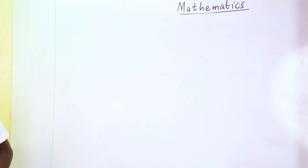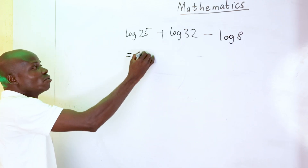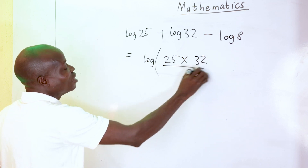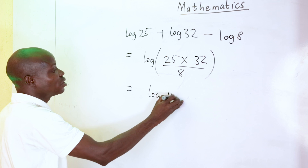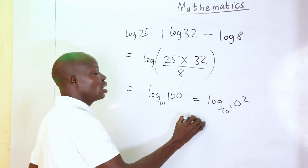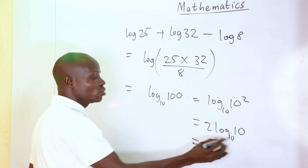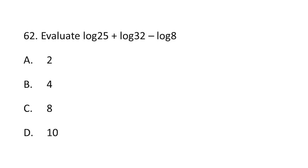Question 62: evaluate log 25 plus log 32 minus log 8. This equals log(25 times 32 divided by 8), which gives log 100 base 10 — that's log(10 squared) base 10, equal to 2 log 10 base 10. Since log 10 base 10 equals 1, the result is 2. The correct option is A.